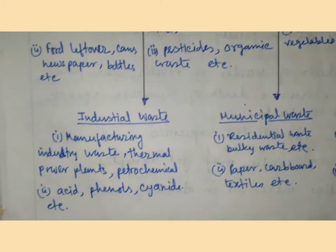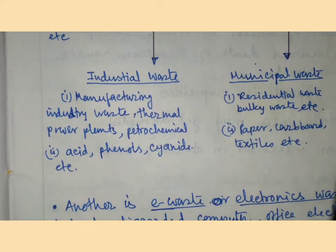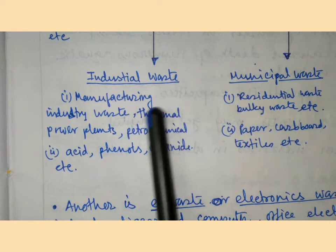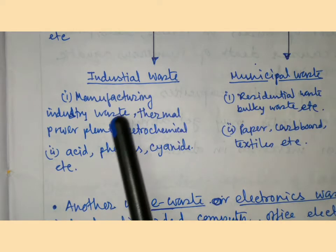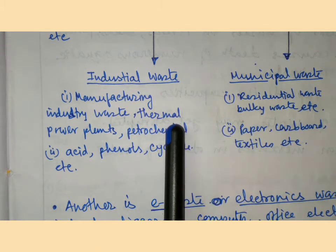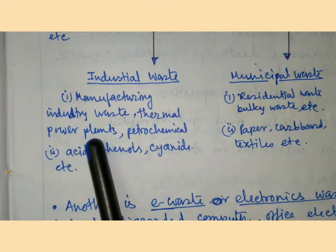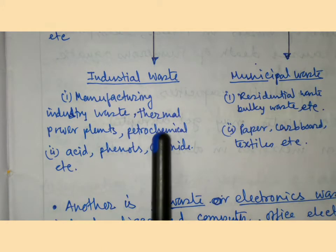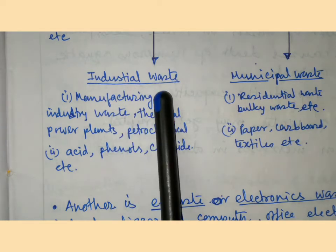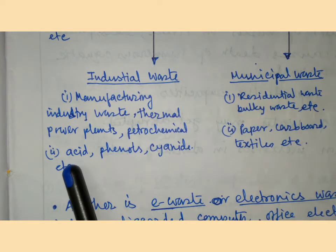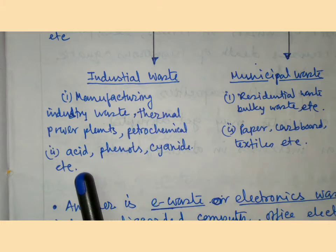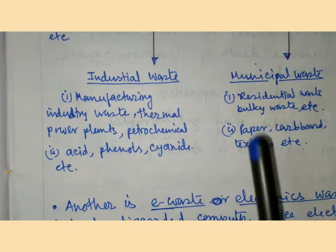Industrial waste comes from manufacturing industries, thermal power plants, petrochemical industries. Examples of industrial waste include acid, phenol, and cyanide.